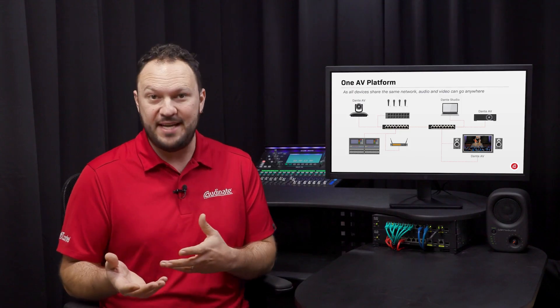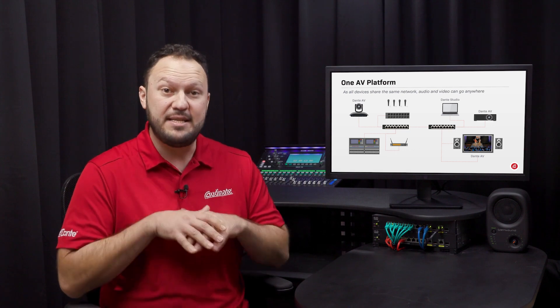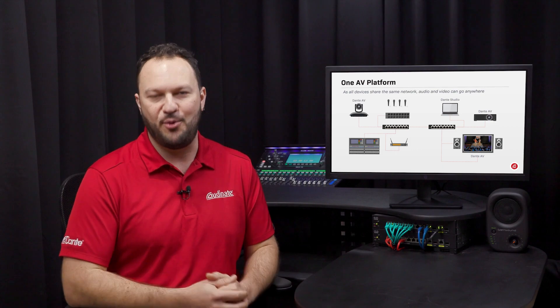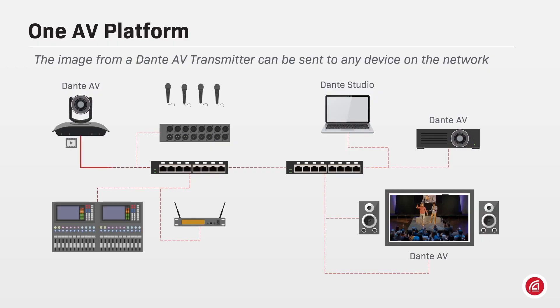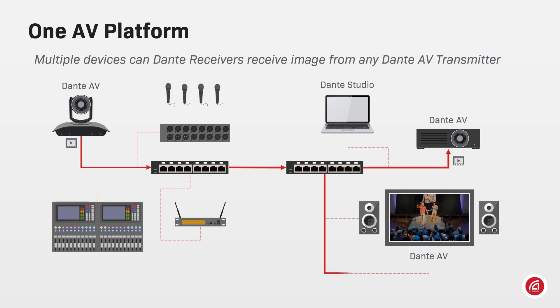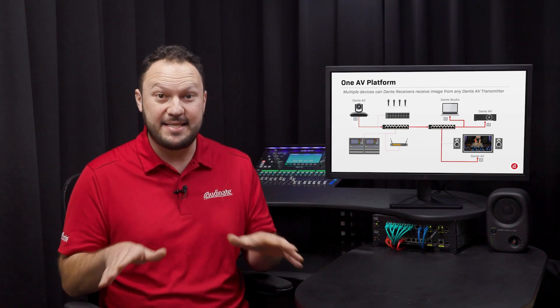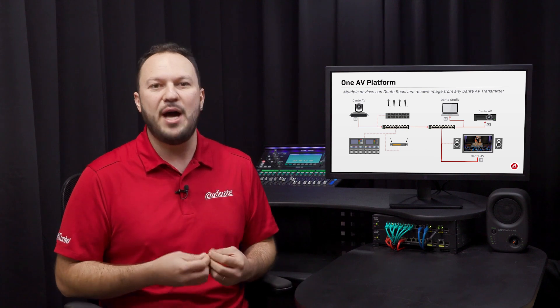As all devices and applications can share the same network, signals can be streamed between all points, no matter where they are located. Once the image is being streamed over the network, multiple receivers can subscribe to that same feed and receive a live stream from any Dante AV transmitter. Video frames and audio samples are packetized separately, allowing users to route signals freely through the network.